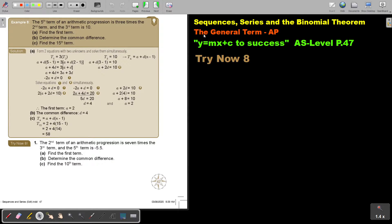This is the last video that I'm going to do on the general term of an AP. You will find this on page 47 in the Namibia AS level mathematics textbook Y equals MX plus C to success. Let's look at another example.